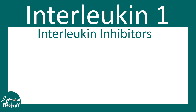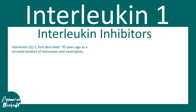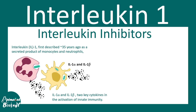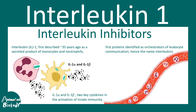In this video we'll talk about interleukin 1. Interleukin 1 was first described 35 years ago as a secreted product of monocytes and neutrophils. This is now known as interleukin 1 alpha and beta. Interleukin 1 beta is basically more important in all biological contexts. When people identified this protein, they found that it orchestrates communication between leukocytes, and hence the name interleukins was proposed.